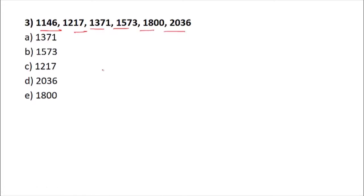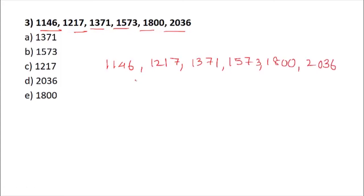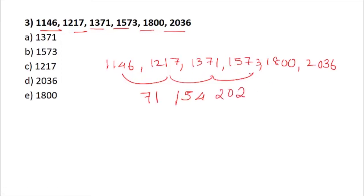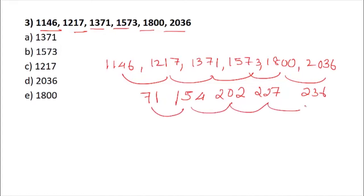Question 3: the difference between terms is not very large, so let us write the series: 1146, 1171, 1371, 1573, 1800, 2036. Checking differences: 71, then 154 again, 202, 722, 236. We are not getting a clear pattern from differences alone, so let us try looking at ratios or division between pairs instead.